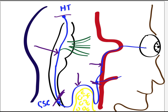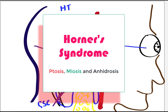Horner syndrome consists of three main features. One is ptosis, which is the droopiness of the eyelid. The second is miosis, which is constriction of the pupil. And the third is anhydrosis, which is lack of sweating.